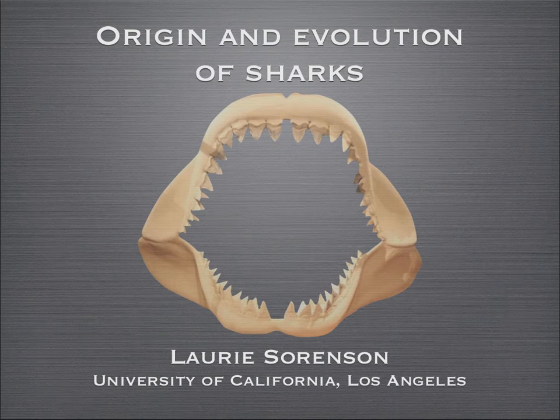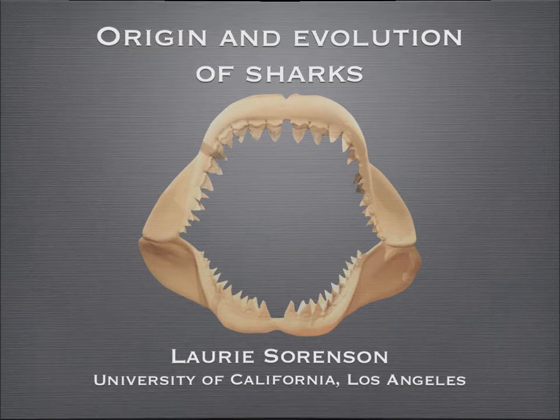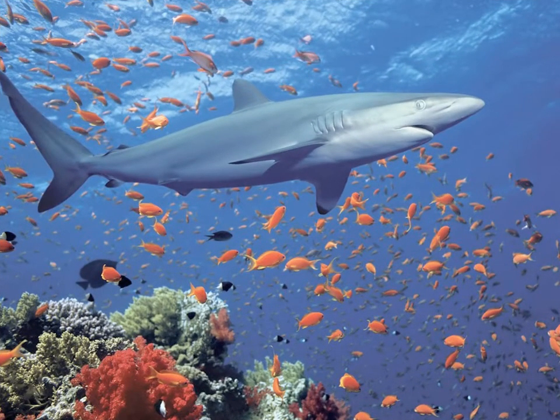My name is Lori Sorensen, and I study the patterns and processes of shark evolution at the University of California, Los Angeles. Sharks are one of the oldest groups of vertebrates. They are top predators in the world's oceans, playing a key role in maintaining the health of marine ecosystems that thousands of species depend on, including humans.